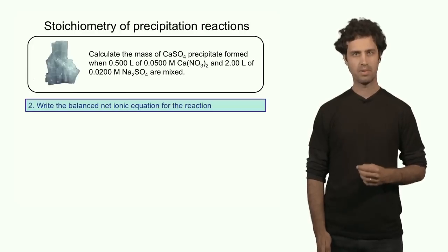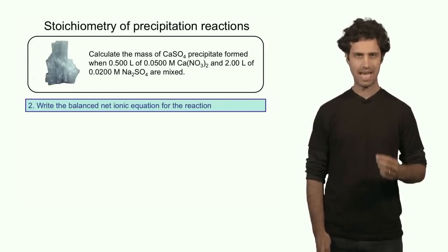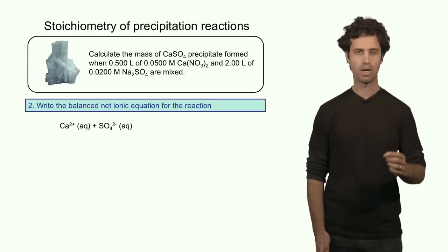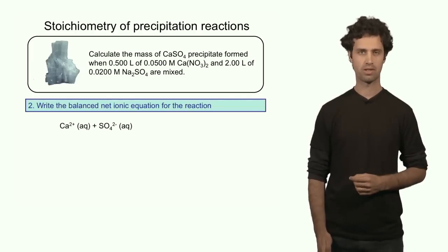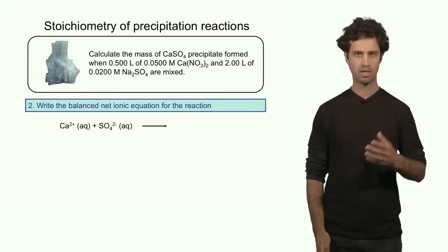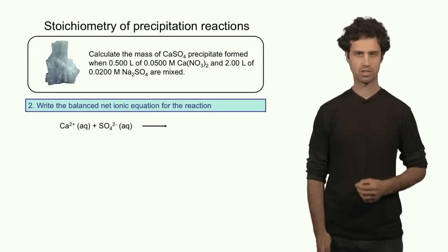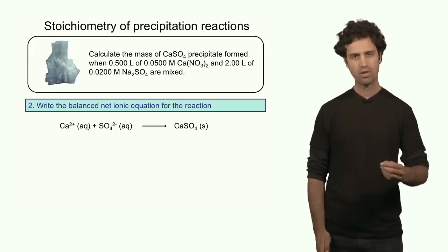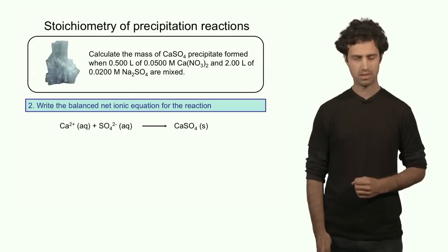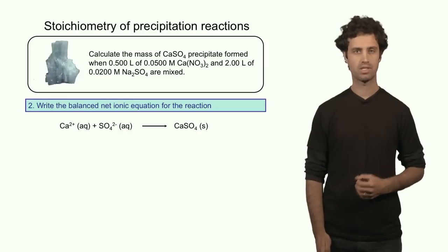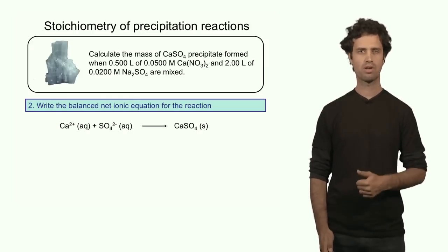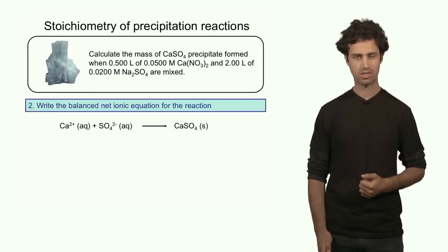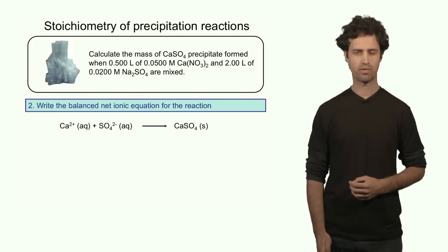Focusing only on the ions that interact, we can write the net ionic equation: one sulfate ion reacts with one calcium ion to form the precipitate calcium sulfate. We have to determine which of these reagents is the limiting reagent — calcium or sulfate — because the limiting reagent determines how much precipitate we form.